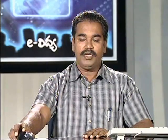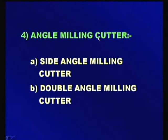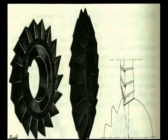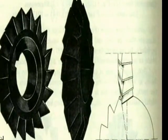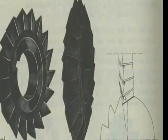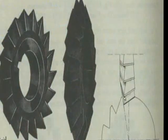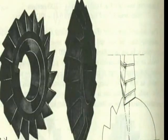The fourth classification is the angle milling cutter. The milling cutters are manufactured in an angular fashion to produce the required angle cut on the workpiece surface. We have two basic types: single angle milling cutter and double angle milling cutter. In a double angle milling cutter, the included angle between the two sides generally ranges from about 45 degrees to 100 degrees. If the angle is on one side only with the other side straight, it is called a single angle milling cutter.